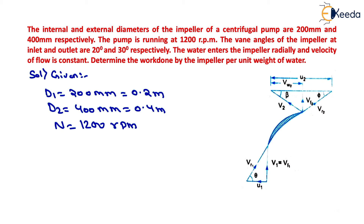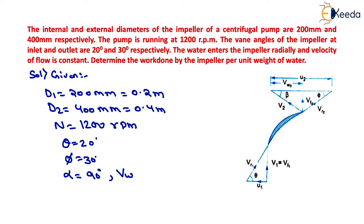Vane angle at inlet is given as 20 degrees, so theta equals 20 degrees as shown here. Vane angle at outlet, phi, equals 30 degrees as given and shown in the diagram. Water enters radially, meaning alpha equals 90 degrees and vw1 equals zero. Therefore, velocity of flow vf1 equals vf2.